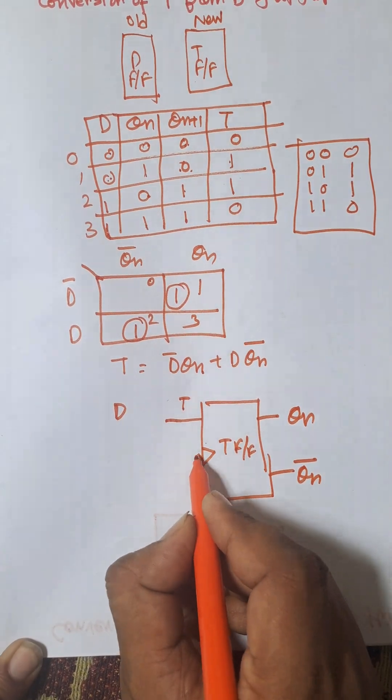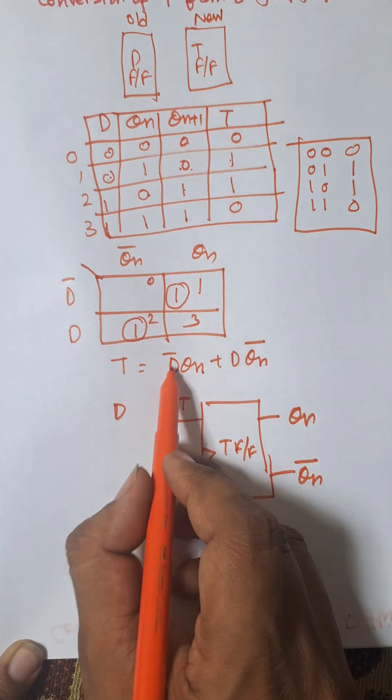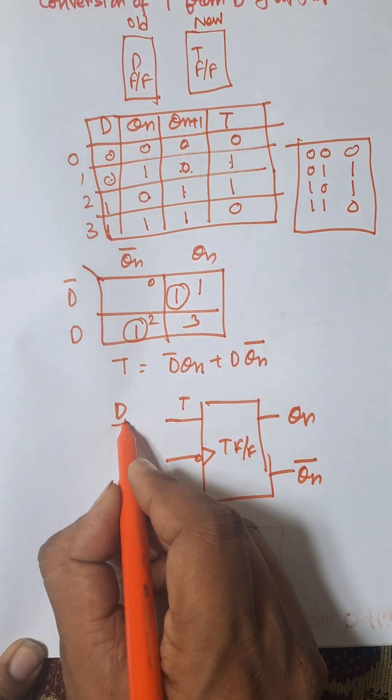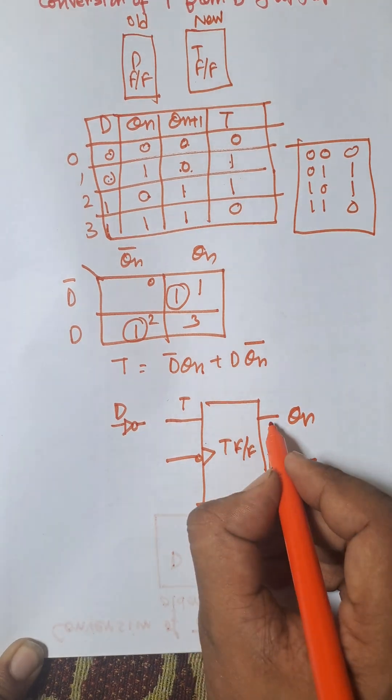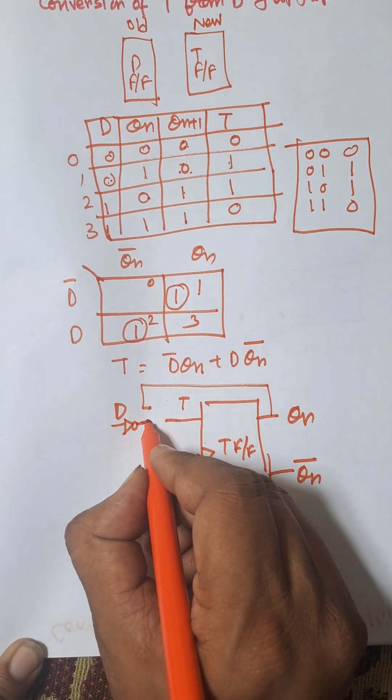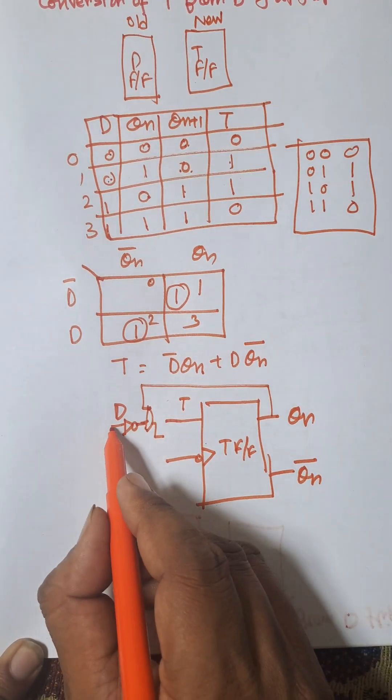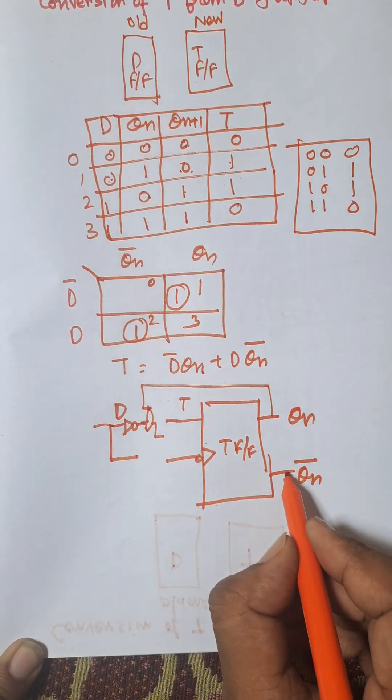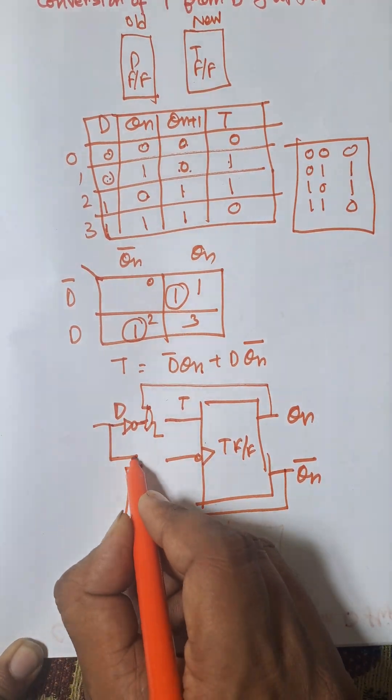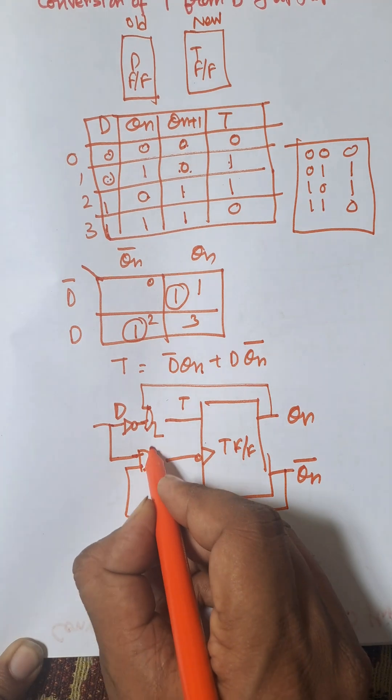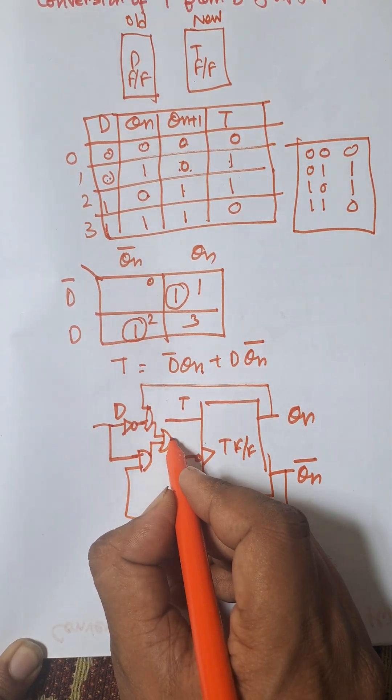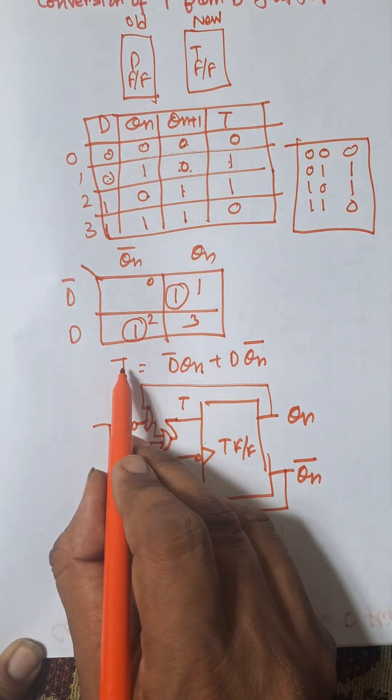A negative clock pulse is applied here. D bar and Qn are ANDed, and D and Qn bar are ANDed. These are multiplied and finally added together with an OR gate. The result is transferred to T, that is T equals D bar Qn plus D Qn bar.